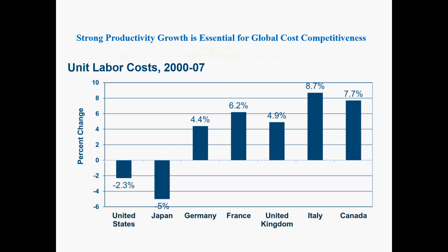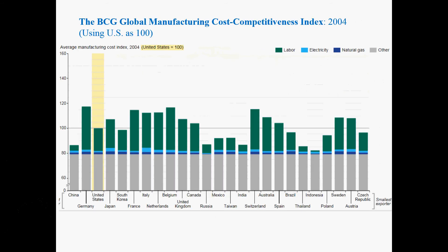In recent decades, people have been talking about re-industrialization of the United States, and part of the reason is reduced labor costs. This slide shows that between 2000 and 2007, labor costs in the United States reduced by 2.3%, which makes American industries more competitive. At the same time, some other developed countries saw their labor costs increasing, making their industries less competitive. This helped drive the re-industrialization of the United States.